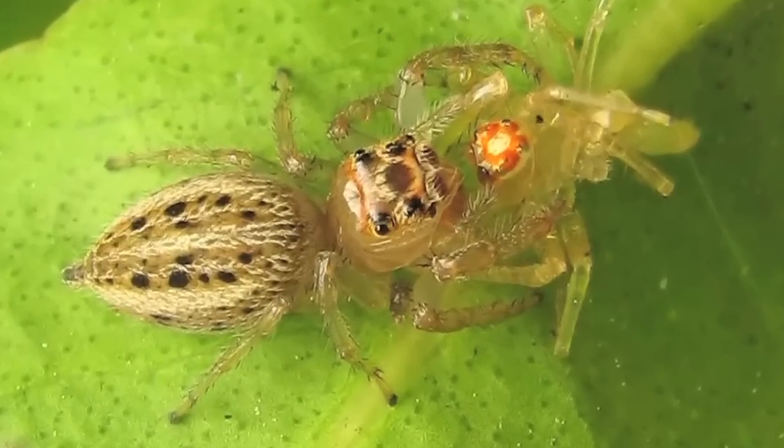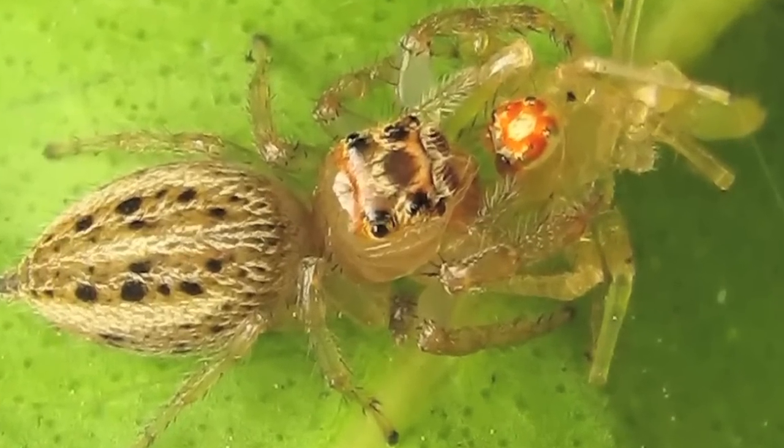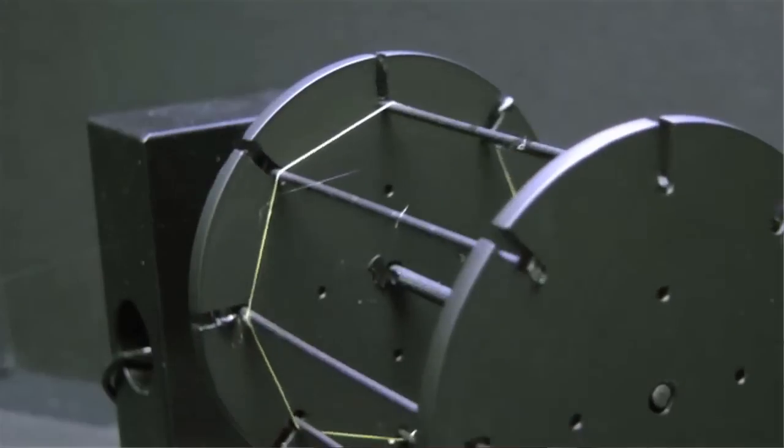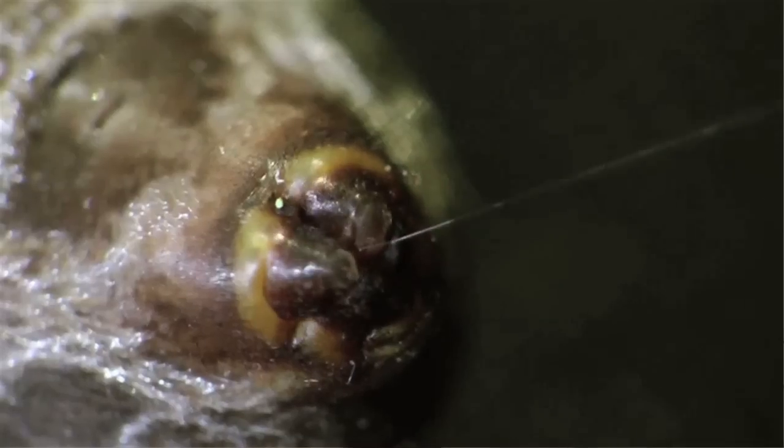So why aren't we cultivating spider silk the same way we do silkworm silk? That's because spiders find other spiders delicious. When they're forced to share the same territory, they become cannibalistic. And it's possible to harvest silk from spiders one at a time, but it's impractical on a mass scale. You have to knock them out and then reel in the silk individually. Plus it's kind of mean.